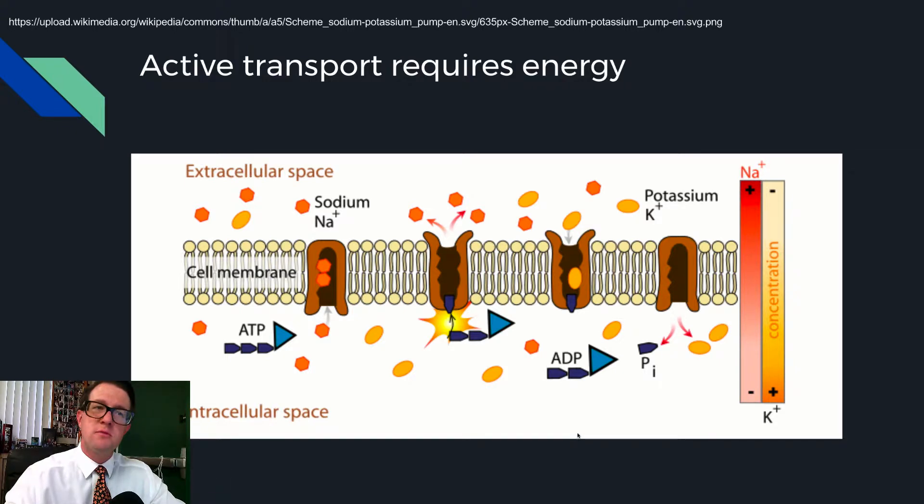When we do this, we create a concentration gradient. Sodium, if allowed to diffuse, will diffuse from the outside to the inside, and potassium ions, if allowed to diffuse, will move from the inside to the outside.